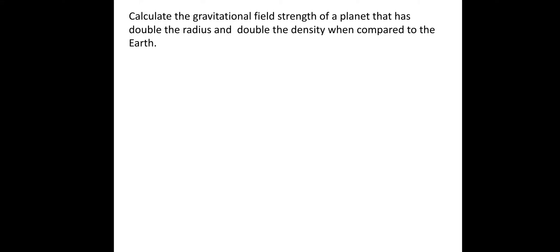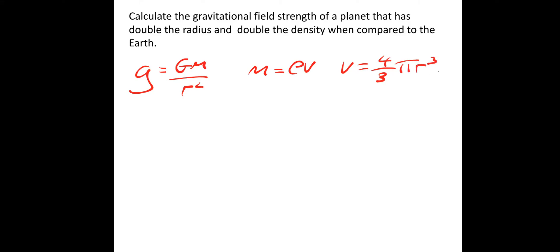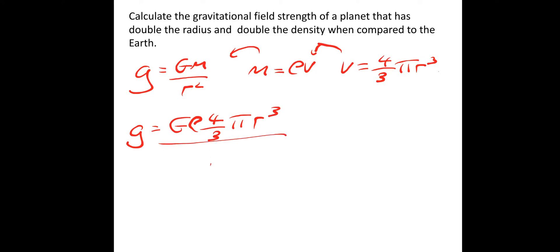Now I'm going to show you how to calculate the gravitational field strength of a planet that has double the radius and double the density compared to Earth. We know g equals GM over r squared. We also know mass equals density times volume, and volume of a sphere is 4/3 π r³. Substituting these in, g equals G·ρ·(4/3)·π·r³ divided by r squared, so the r squared cancels, leaving the useful equation: g equals G·ρ·(4/3)·π·r.